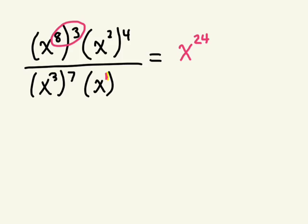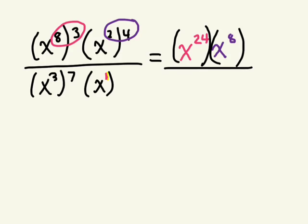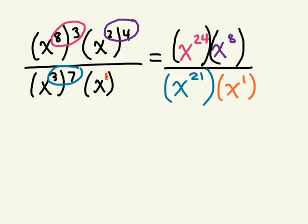Then simplify 2 times 4, which becomes x to the power of 8. Now let's simplify the denominator: x to the power of 3 to the power of 7 becomes x to the power of 21, and that's being multiplied by just x to the power of 1. We still don't have a single power — we still need to simplify.